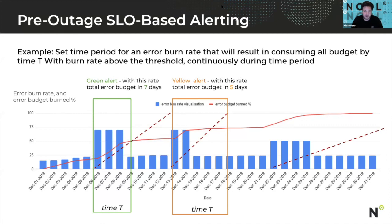If you've ever seen the movie Minority Report, you remember that Tom Cruise can actually predict crimes before they happen. And SLOs let you predict outages before they happen. We track the increased error rate, and we watch the slope of errors relative to our error budget. You know that an SLO is at risk, and you can have your team respond to it before the outage even occurs.